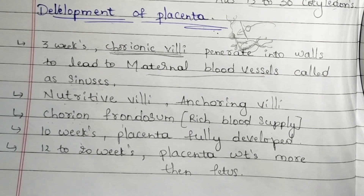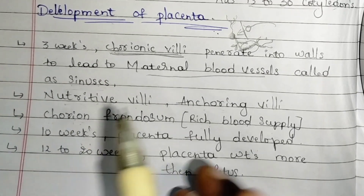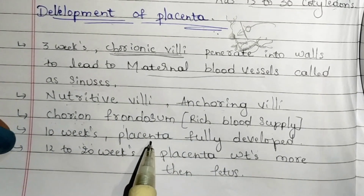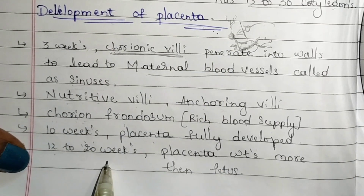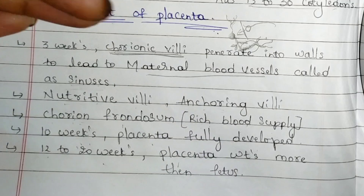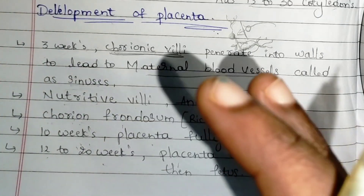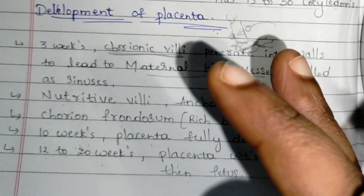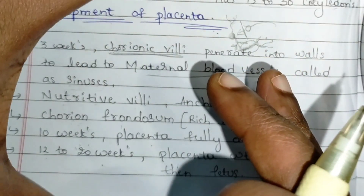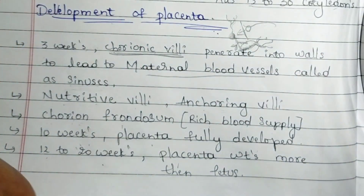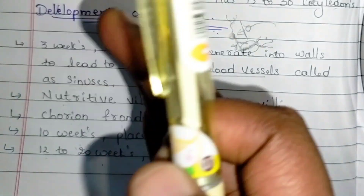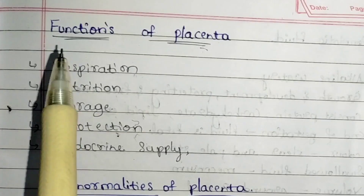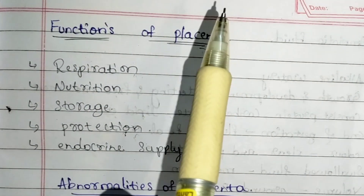By the 10th week from fertilization, the fetal placenta will be fully developed. From the 12th to 20th week, the placenta will weigh more than the fetus, as the fetus is still small. After the 20th week, the fetus starts developing its hands, legs, and other organs, and the fetus starts to weigh more.